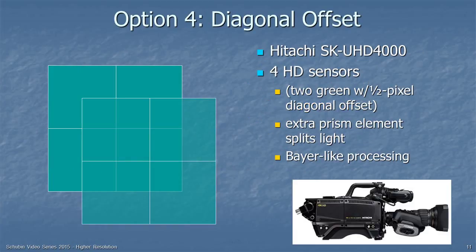Option 4 is to do a diagonal offset between two green chips. This is what Hitachi has done in one of its 4K cameras. They have four HD sensors — all HD — so the red and blue are just HD. The green has two sensors with a diagonal offset. This requires an extra prism element that splits the light going to green, causing some light loss. And they still have to do the same kind of processing used in single-chip systems, including up-conversion.